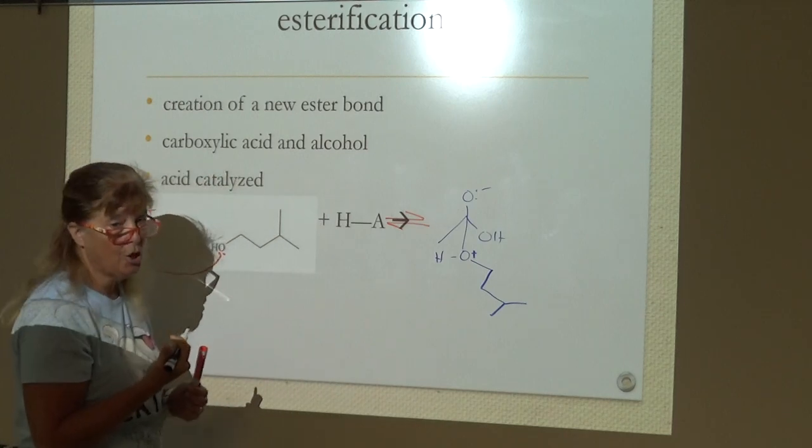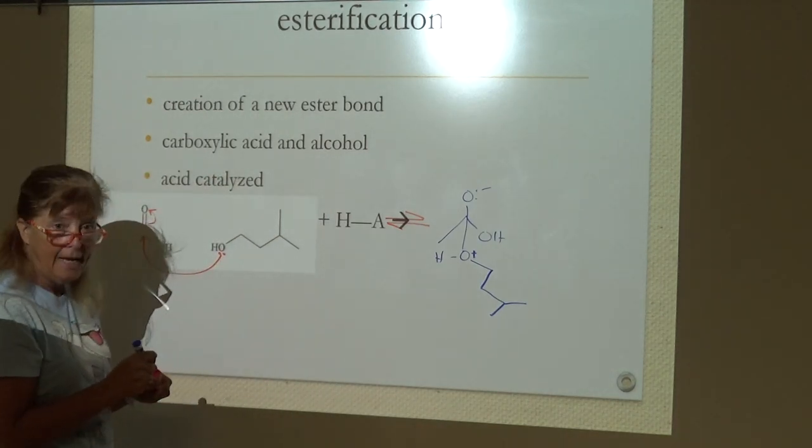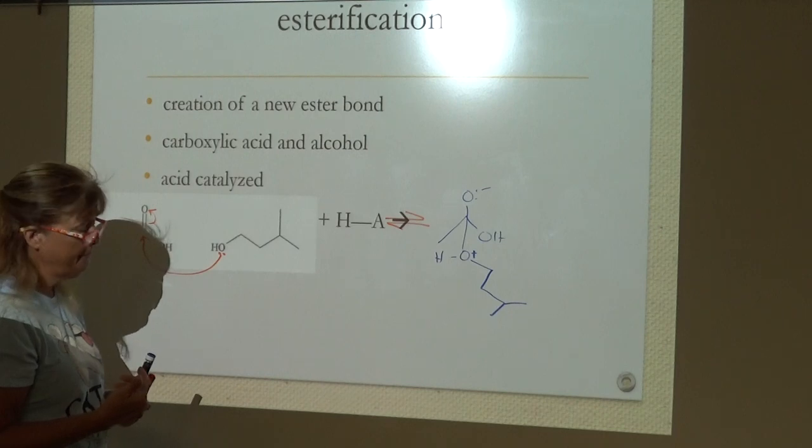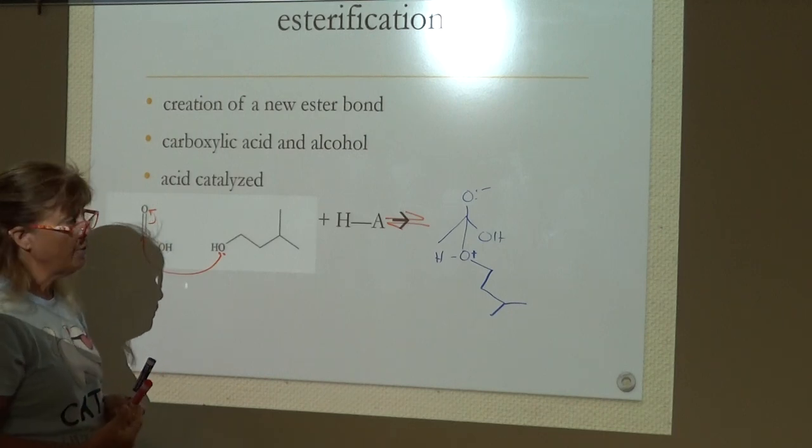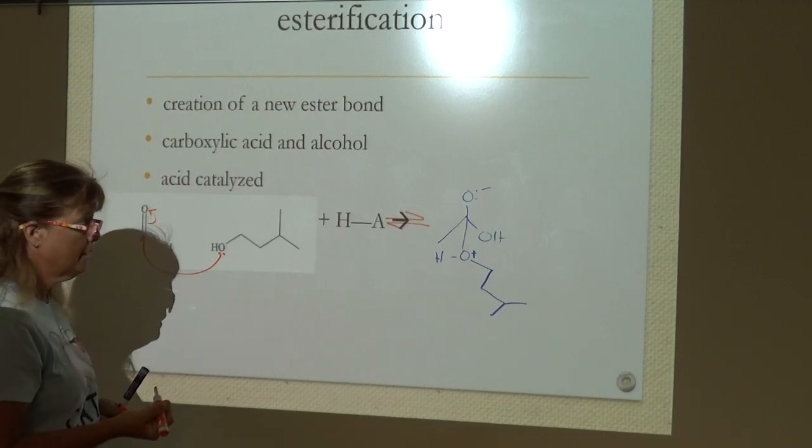Make sure and count your carbons. That gives us our zwitterion intermediate. It is an intermediate. There's no way to clean it up, so the process is going to continue.